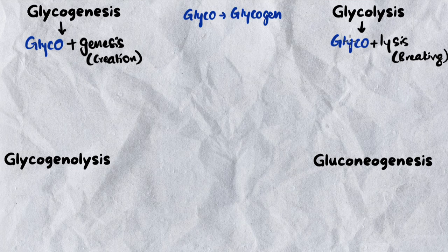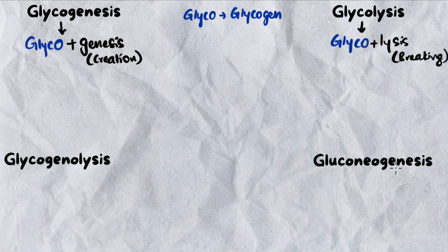Another problem I was having was that there's no such thing as 'glucogenesis' — creation of glucose. That term does not exist. There is something called gluconeogenesis which we'll talk about later, but if glycogenesis exists as creation of glycogen, why doesn't glucogenesis exist as creation of glucose? That term doesn't exist at all.